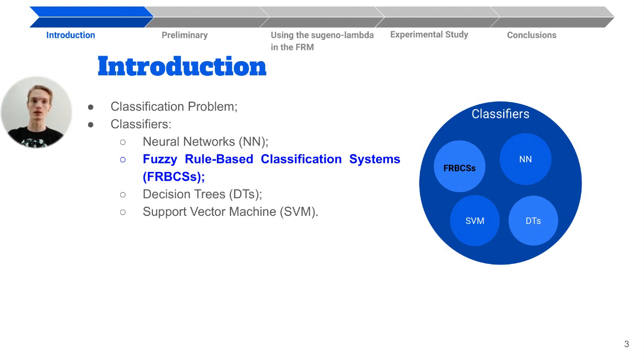We have many different heuristics to solve this type of problem. Some of them are neural networks, decision trees, support vector machine, and fuzzy rule-based classification systems, which is the heuristic chosen for this study.